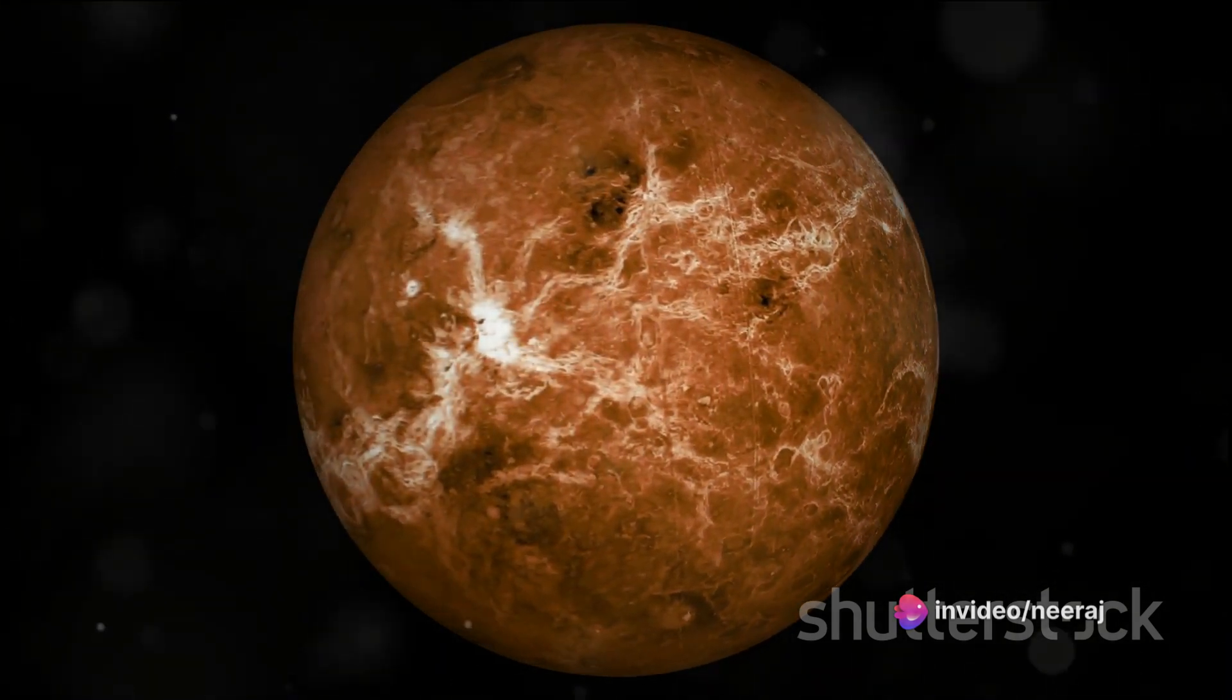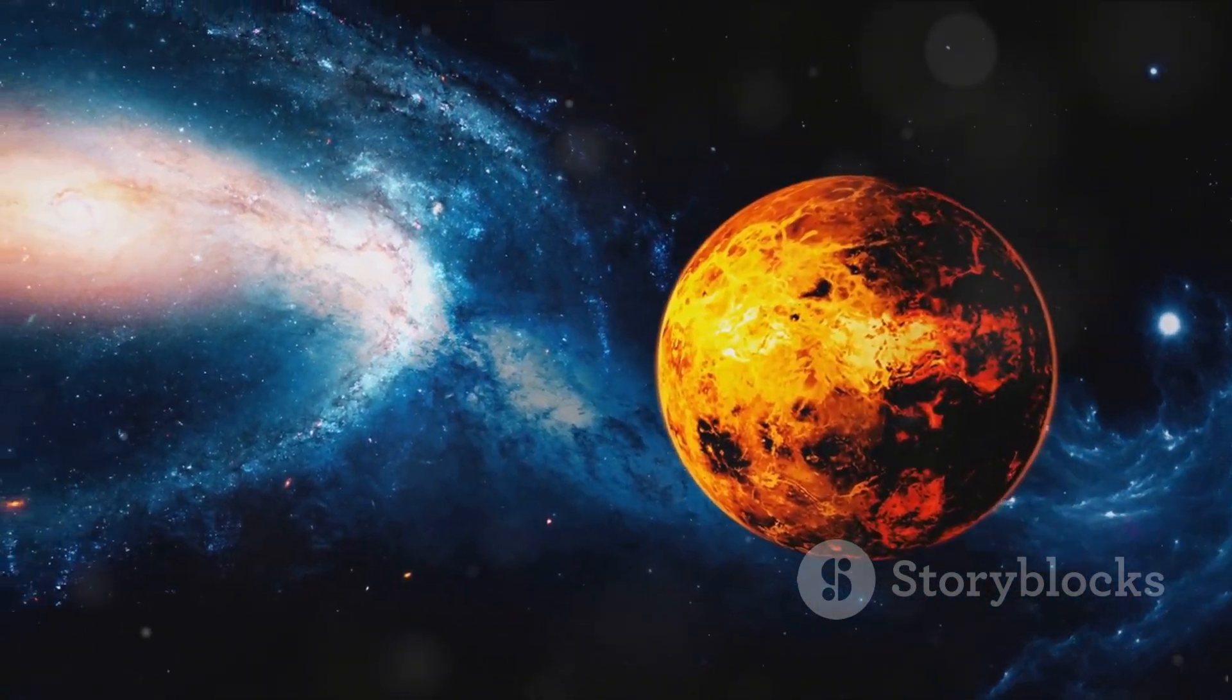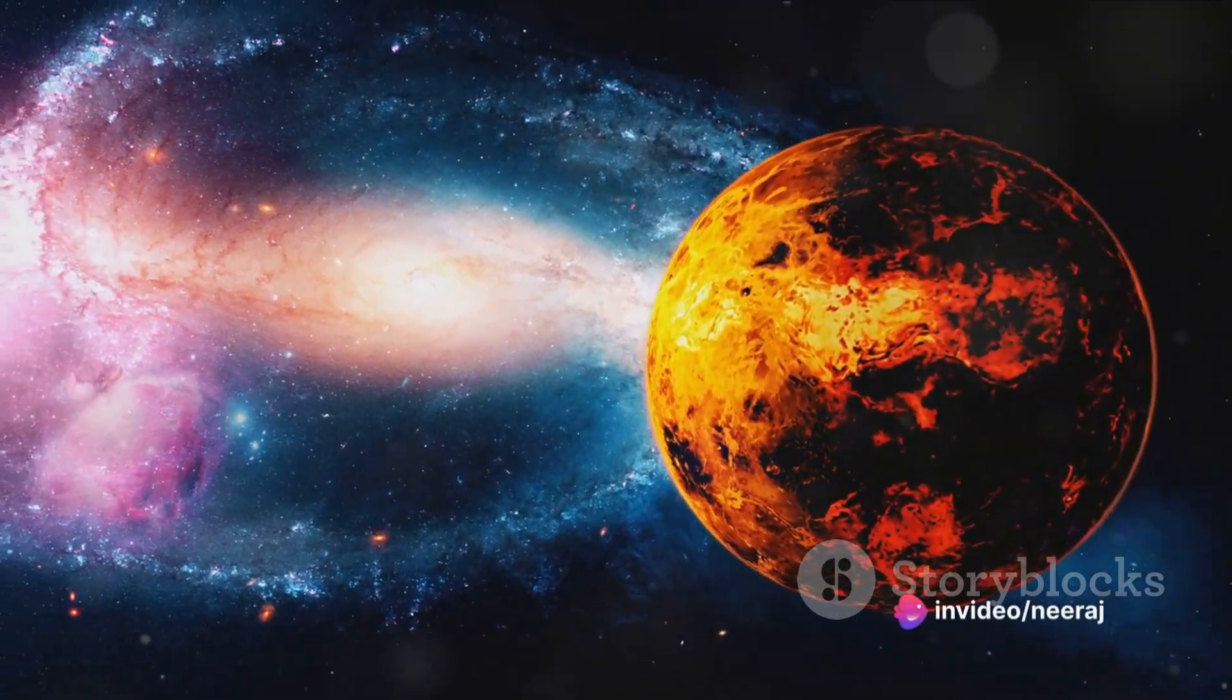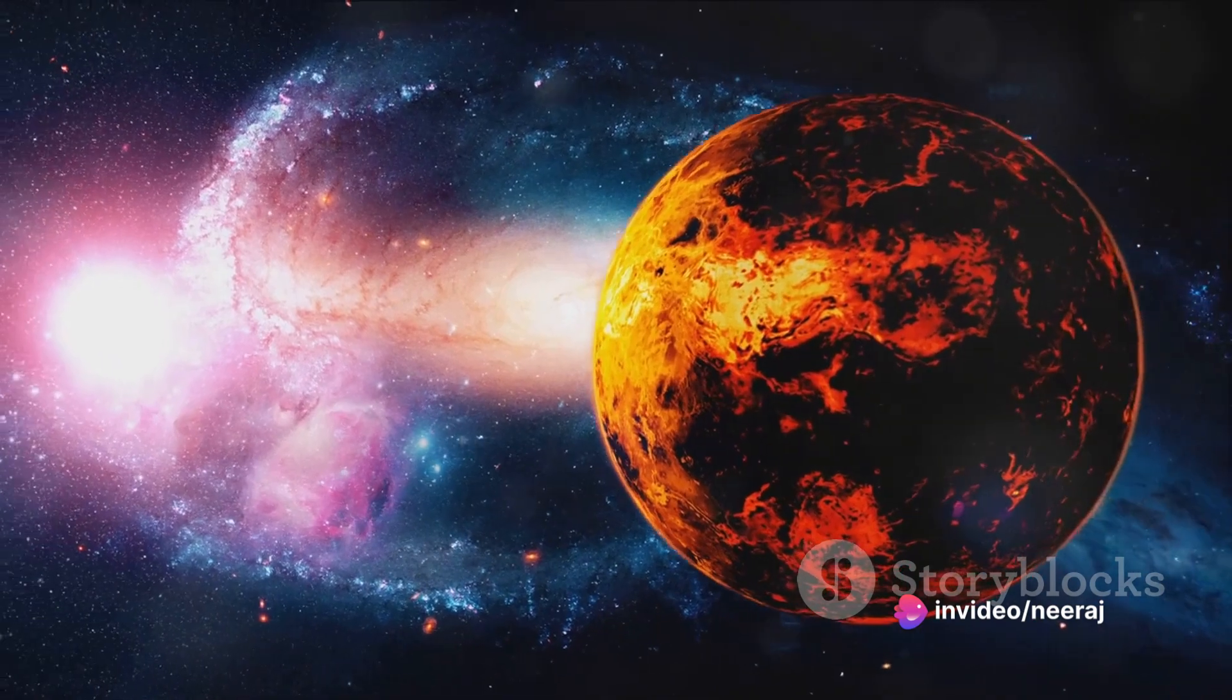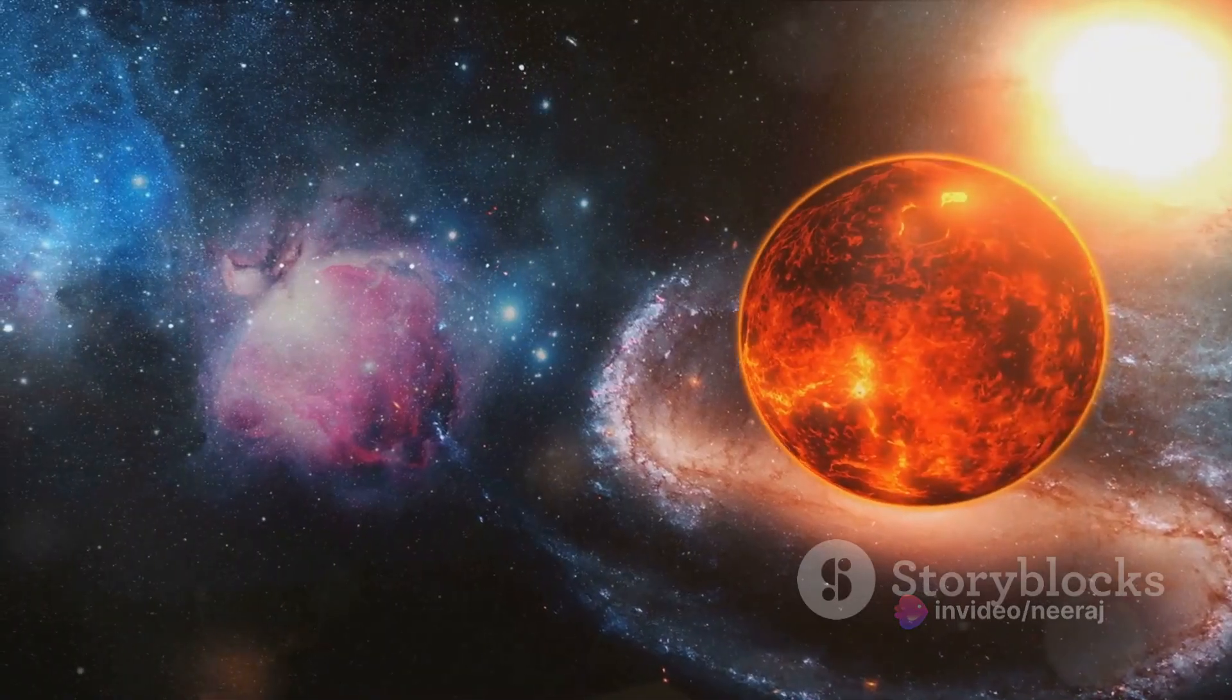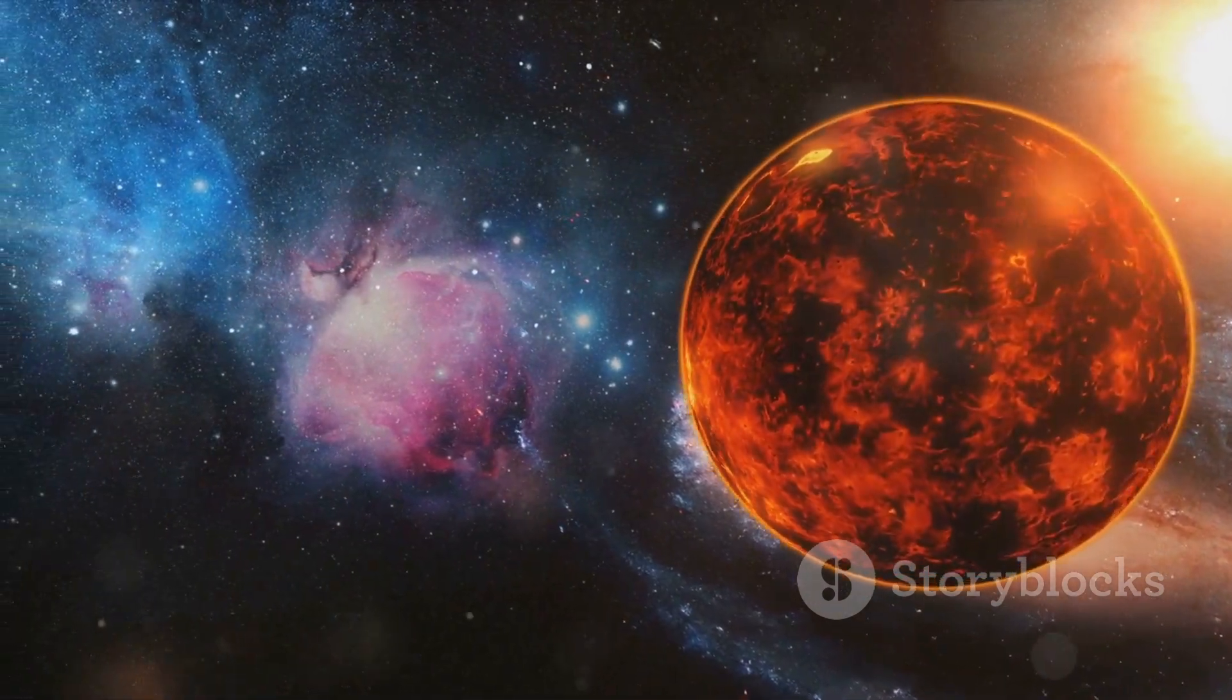Venus, the second planet from the Sun, is often considered Earth's sister planet due to their similar sizes and masses. They are so close in size that Venus is the closest to Earth in terms of physical dimensions among all the planets in our solar system. Both planets share a rocky composition and have thick atmospheres, but that's where the similarities seem to end.